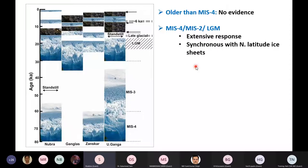And we observed that the response was extensive and it was synchronous with the northern latitude ice sheets, which is again in contrast with the earlier suggestion where the extent of the last glacial maxima was either suggested to be very limited or it was suggested to be altogether absent. And the reason was because they were considering Indian summer monsoon as the primary driver for these glaciations.